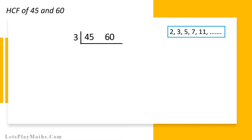Now, divide both 45 and 60 by number 3. We will get results 15 and 20 as shown here.